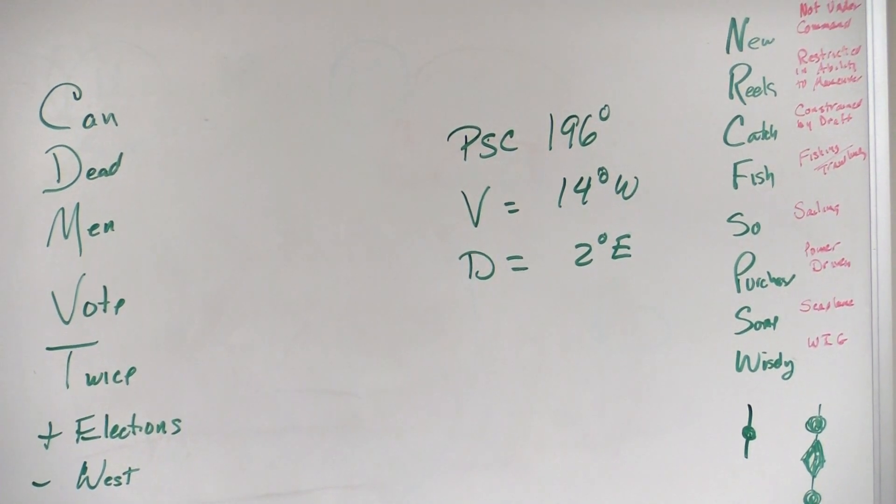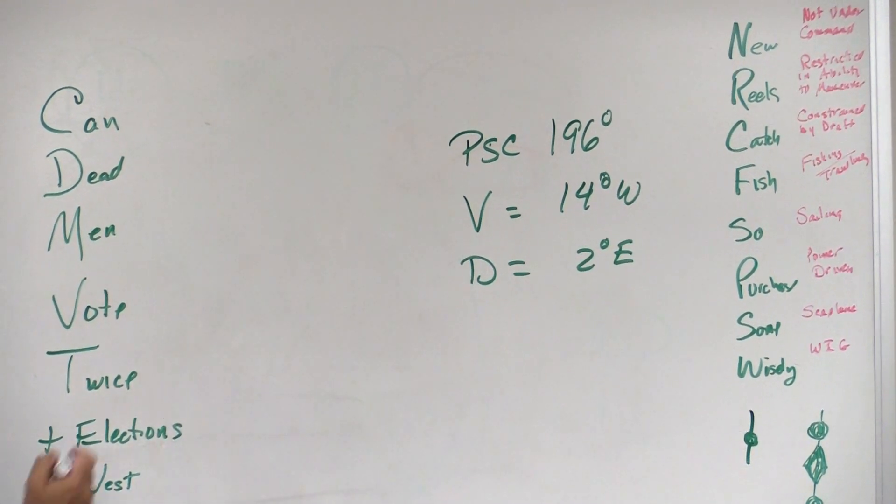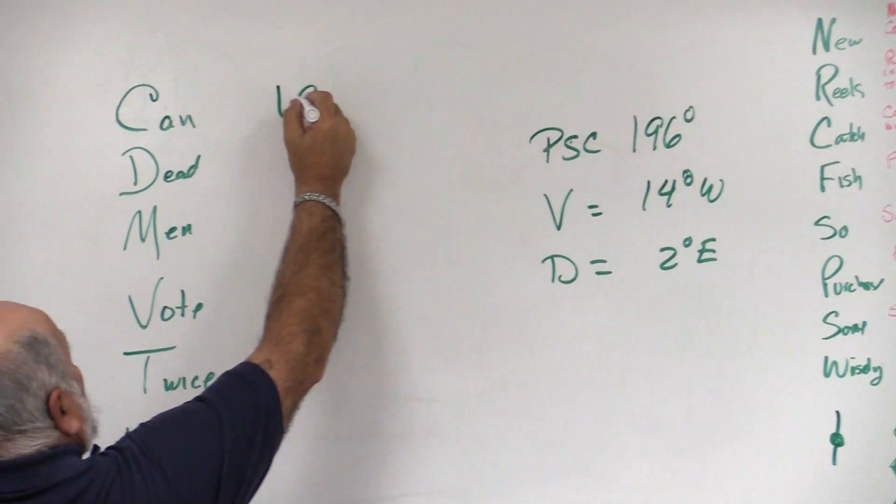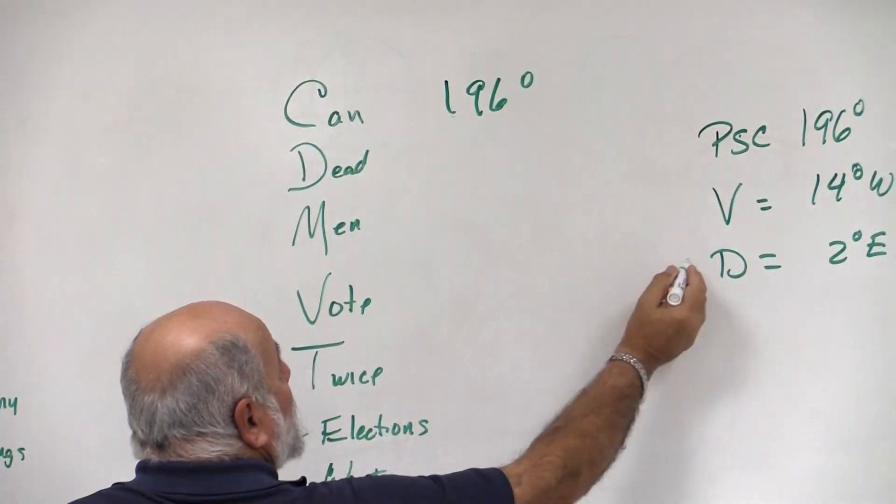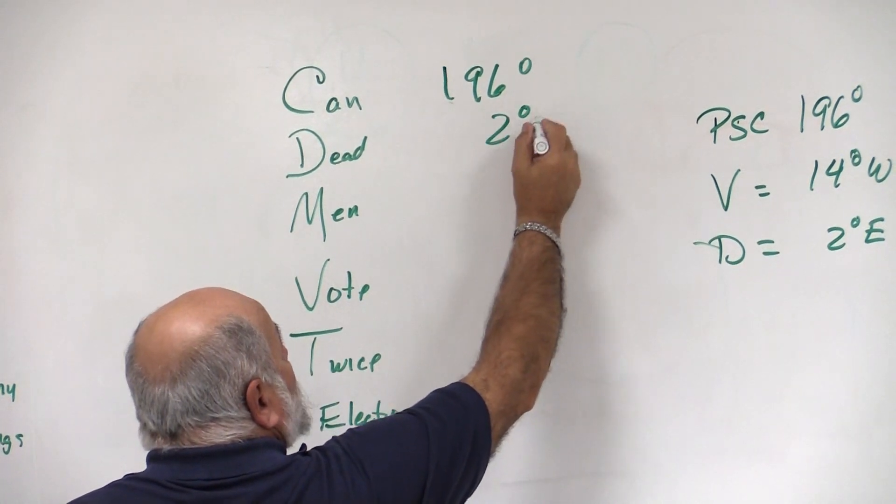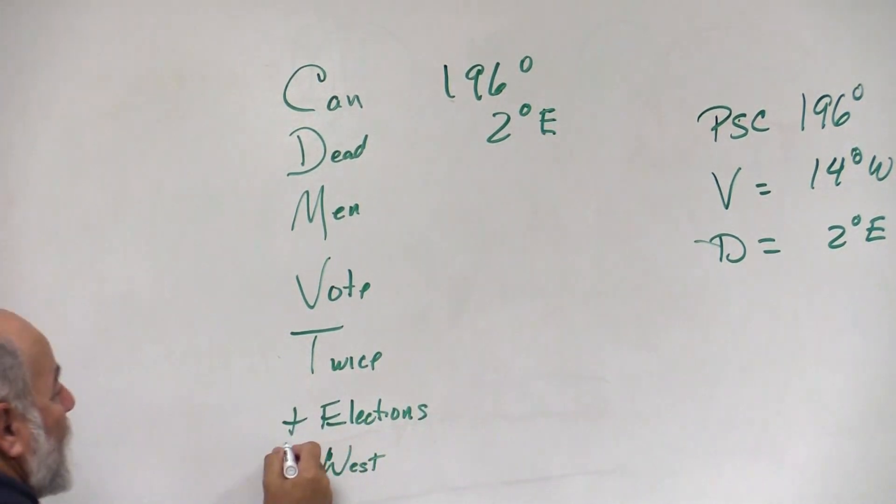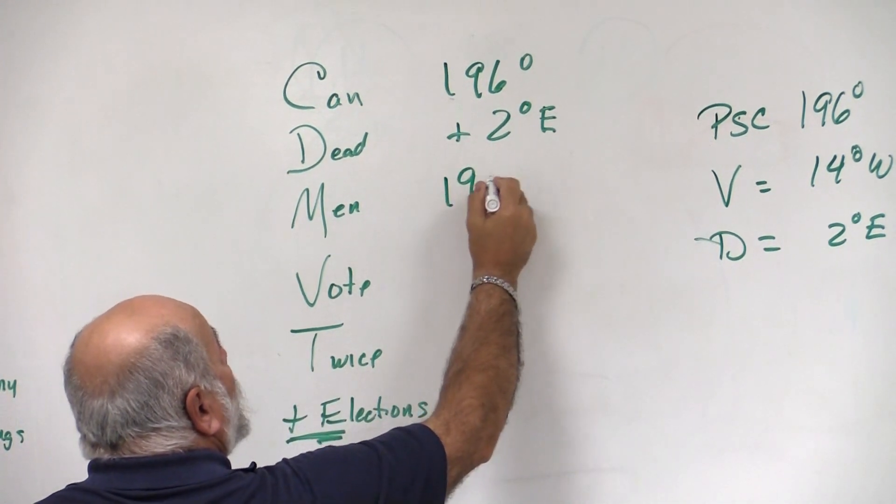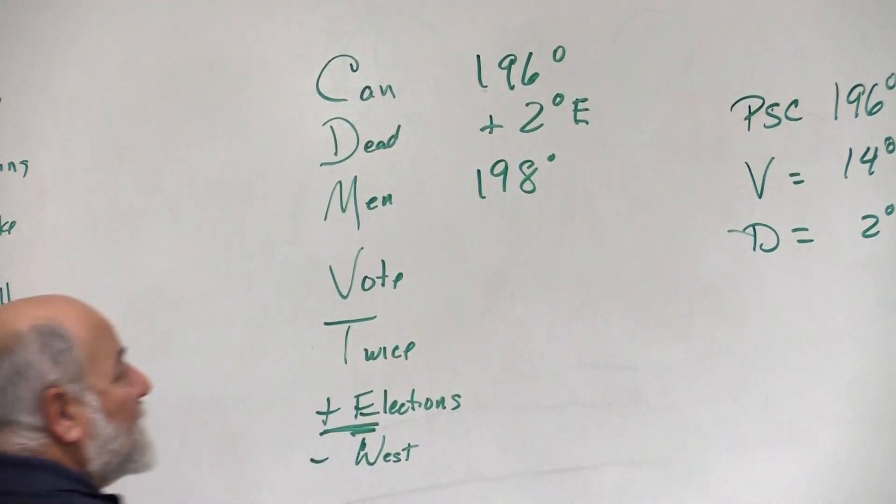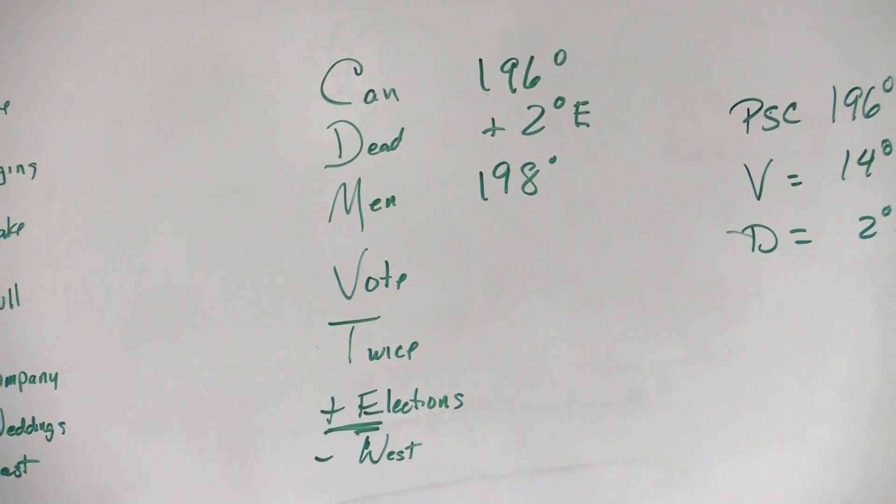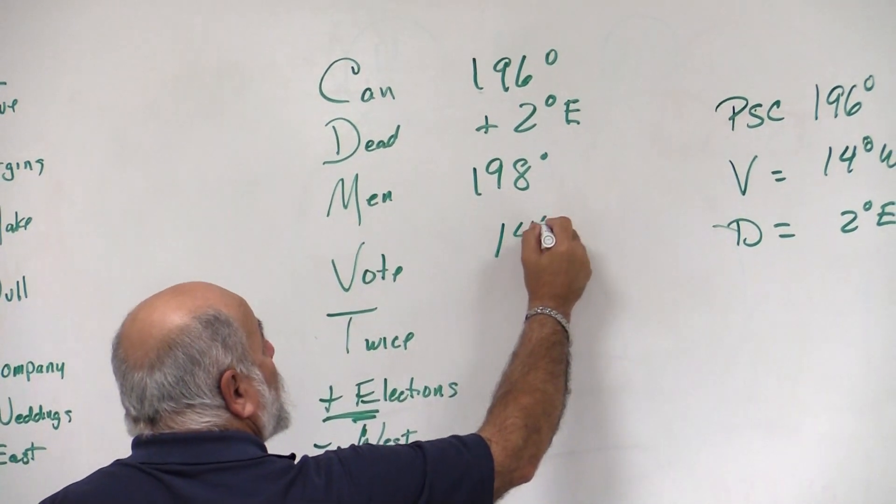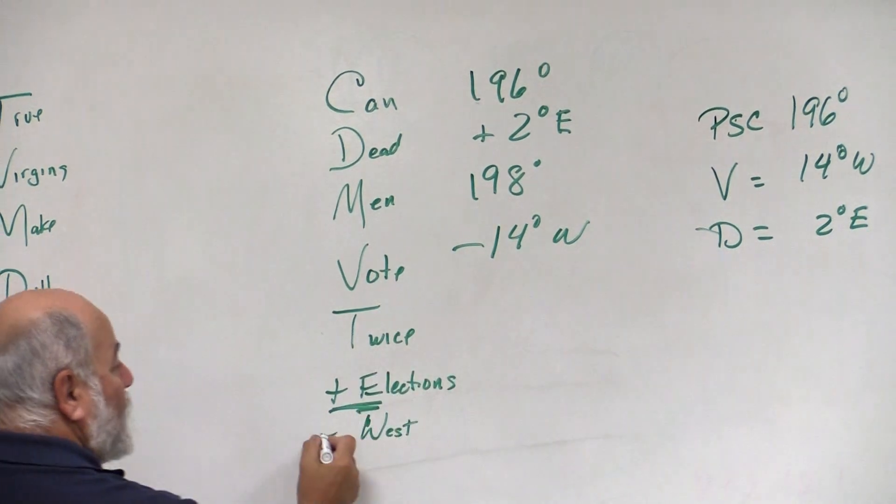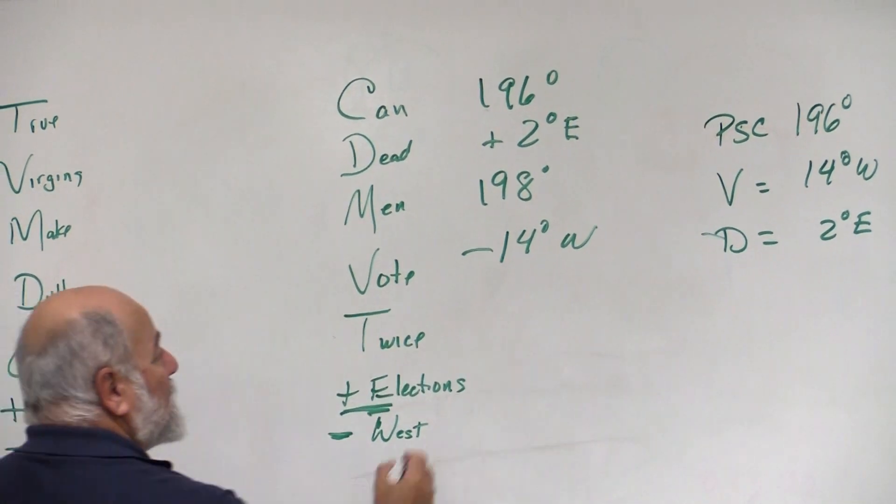We plug in the numbers and we do the math. Compass, 196 degrees. Deviation, 2 degrees easterly, and we know we're adding east, so we're going to add that. Our magnetic heading would be 198. Variation for the area, 14 degrees to the westward. We're going to subtract west, that's what the formula tells us.